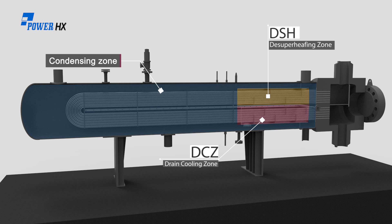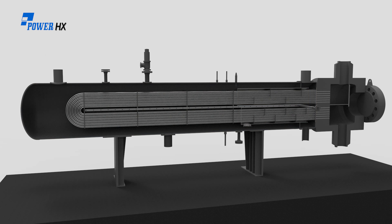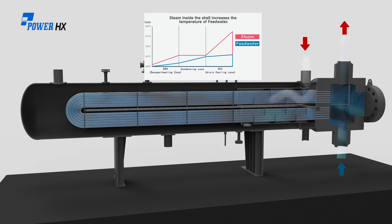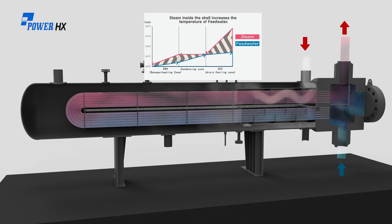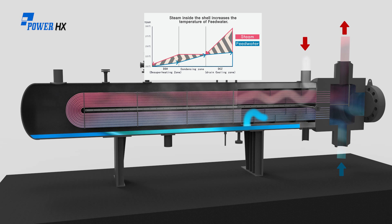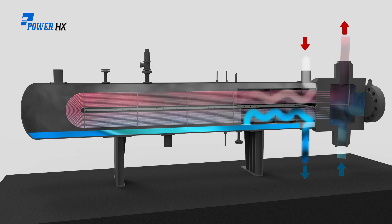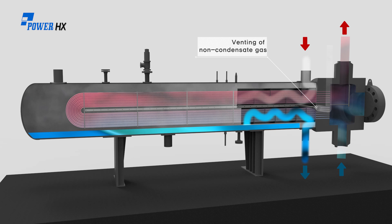For a three-zone feedwater heater: feedwater flows into the tubes through the feedwater inlet nozzle. As steam flows in through the steam inlet nozzle, the steam inside the shell exchanges heat with the feedwater, causing its temperature to continually increase. Non-condensate gases, which decrease the performance of the feedwater heater, are released. Keep the vent nozzle open while operating the feedwater heater.